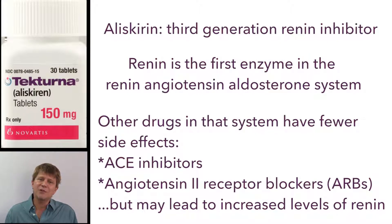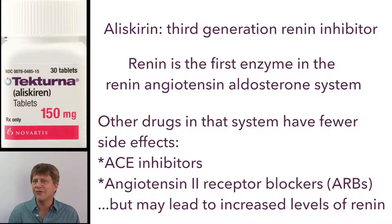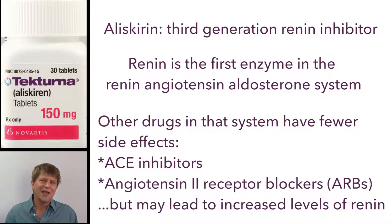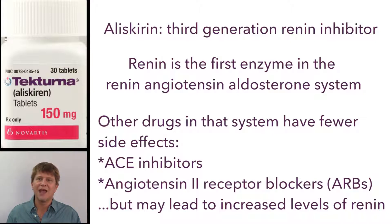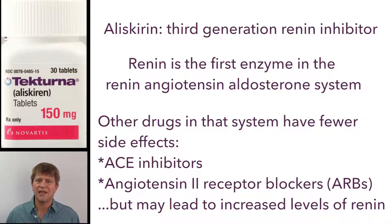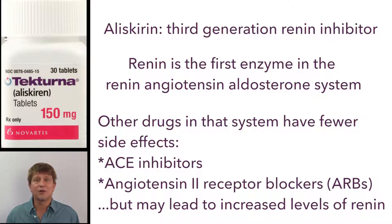The ACE inhibitors and angiotensin-2 blockers are the other two drug groups affecting that system. They control blood pressure well, but with chronic use they often raise the amount of renin in the system, causing blood pressure to start rising again. This is why scientists have been looking for a direct renin inhibitor since the 1970s.